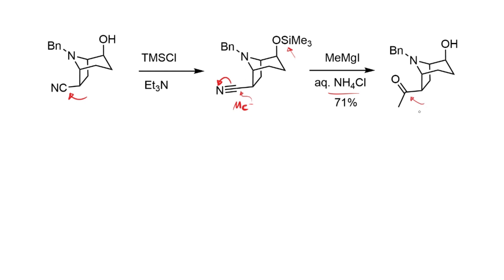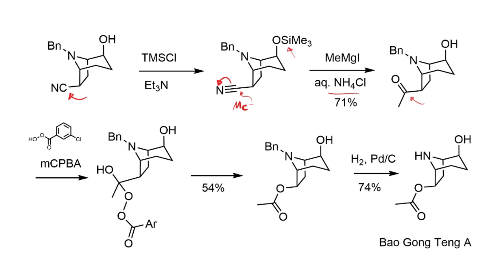To convert the acetyl group to the acetoxy group, a Baeyer-Villiger reaction was used. Reaction with meta-chloroperoxybenzoic acid (mCPBA) gives an adduct with the peracid adding to the ketone; the oxygen lone pair drives migration of the most electron-releasing group — essentially the entire rest of the molecule — onto the oxygen, with meta-chlorobenzoate as the leaving group. The Baeyer-Villiger oxidation proceeds in 54% yield to insert the oxygen and give the acetoxy group.